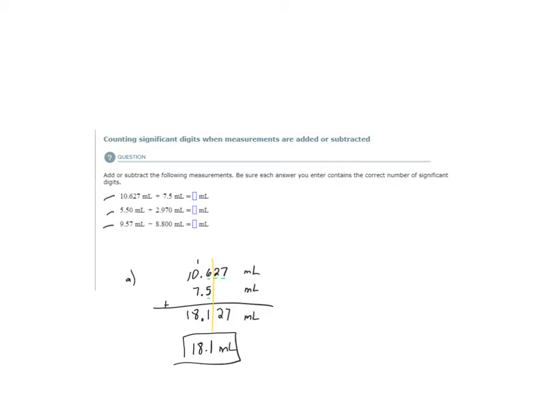Let's look at b. 5.50 milliliters plus 2.970 milliliters. In this case, how many decimal places is our final answer limited to? Two decimal places.